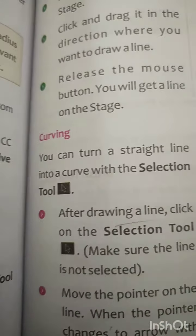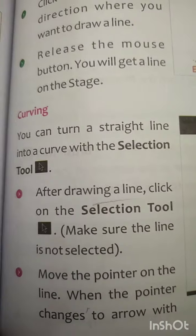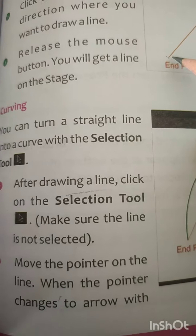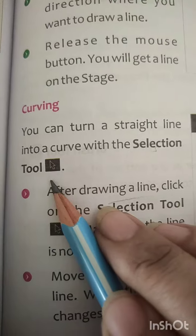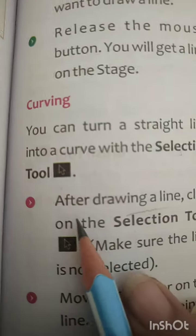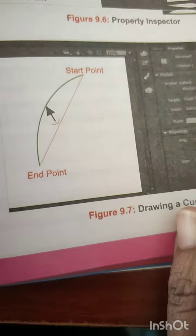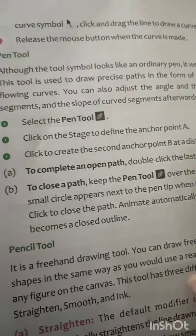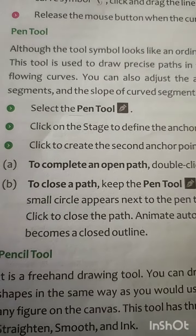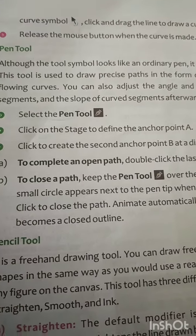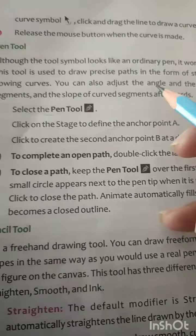Now, curving — we can also make a straight line into a curve line. To create a curve line, you have to first draw a straight line on your screen. After that, you have to click the selection tool. You just have to choose the selection tool and then stretch the line in the direction of the curve — just click and stretch towards that angle — and the line will be curved in that direction.